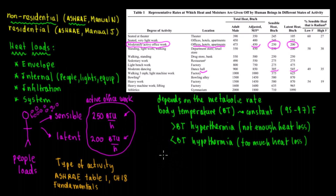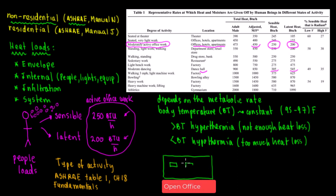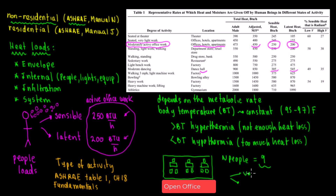People load is very important in practice. For example, in a large open office, the architect provides drawings and will show you the chairs. You count the number of chairs — say nine chairs means nine people. That number is important for two things: calculating the ventilation and calculating the people heat load.